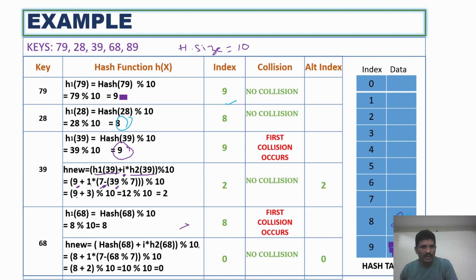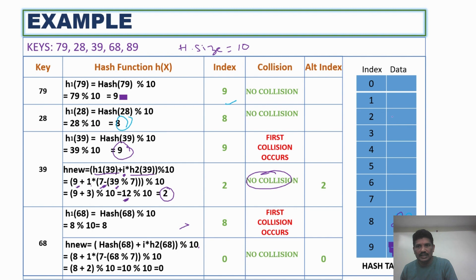The value we get is 9 + 3 = 12, then 12 modulus 10 = 2. At index 2, we check whether it is a free slot. There are no collisions at index 2, so 39 is stored at index 2. 39 has been placed at index 2 because it is free.